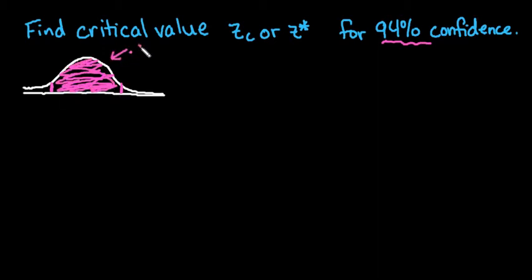So that means that 0.94 is our area in the middle. We're looking for the Z-score that corresponds, both the positive and negative Z-score that corresponds to our ending points for 94% confidence or 94% in our normal curve. What we're technically doing is we're trying to find the area in the outside tails.